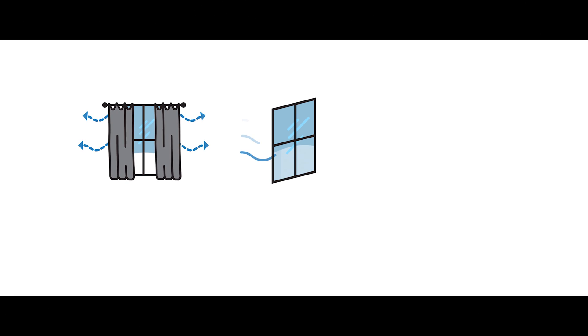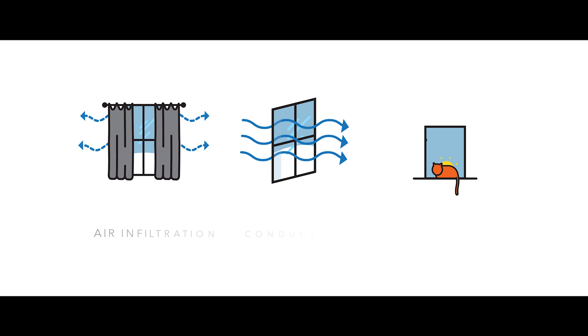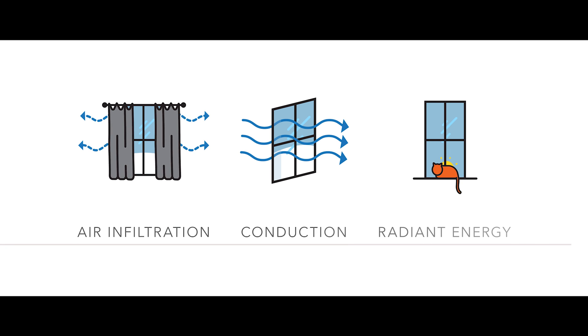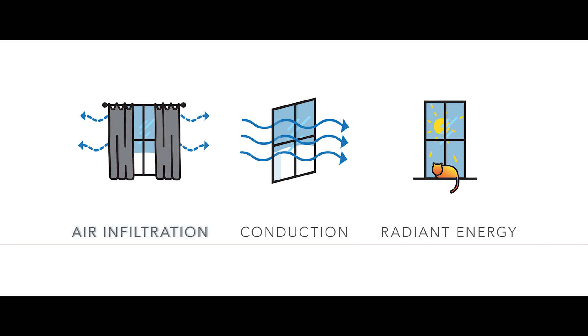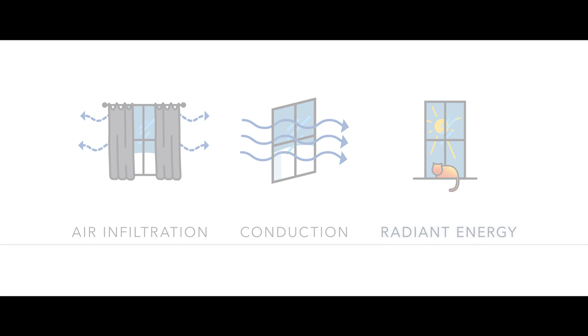Today we're going to talk about the energy efficiency of windows and doors. Inefficient windows waste energy in three main ways: the first is infiltration, conduction, and then radiant energy.